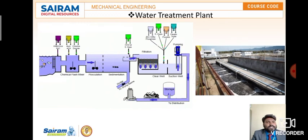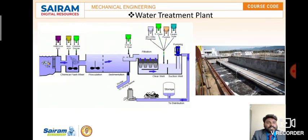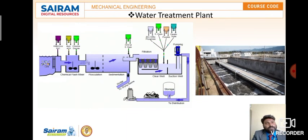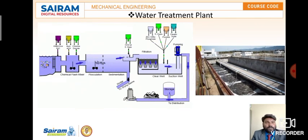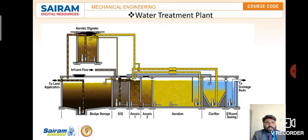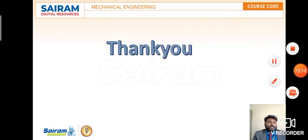For reference, the working principle of the water treatment plant is shown here. The process involves a chemical flash mixer, sedimentation where sludge particles settle, then a clear well and suction well for storage. Another view shows an aerobic digester, anoxic zones (anoxic one and anoxic two), and sludge handling — these are examples of how a water treatment plant functions.